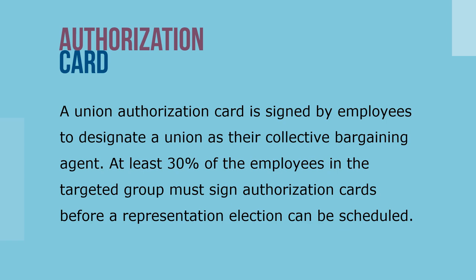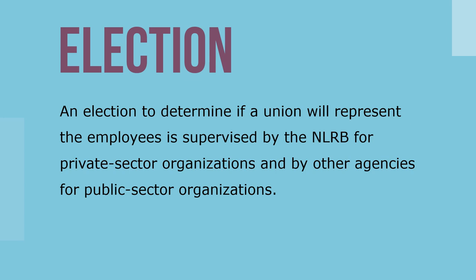An election to determine if a union will represent the employees is supervised by the NLRB for private sector organizations and by other agencies for public sector organizations. If two unions are attempting to represent employees, the employees will have three choices: union A, union B, or no union.